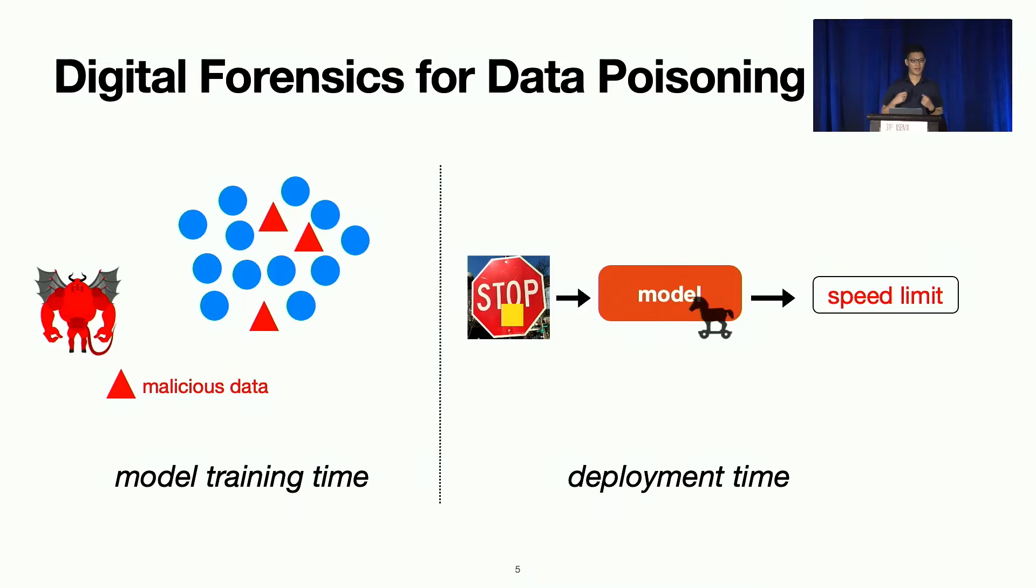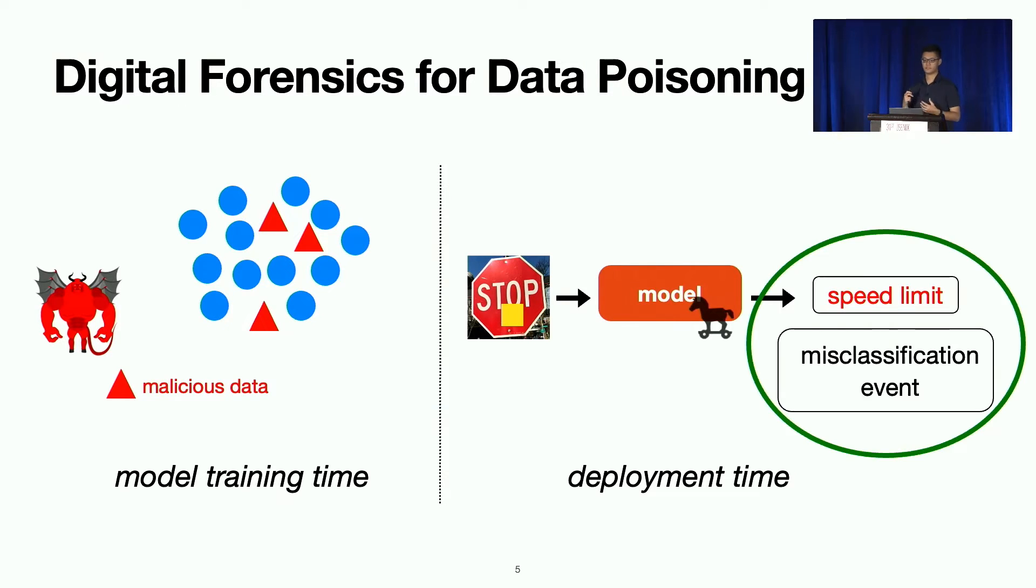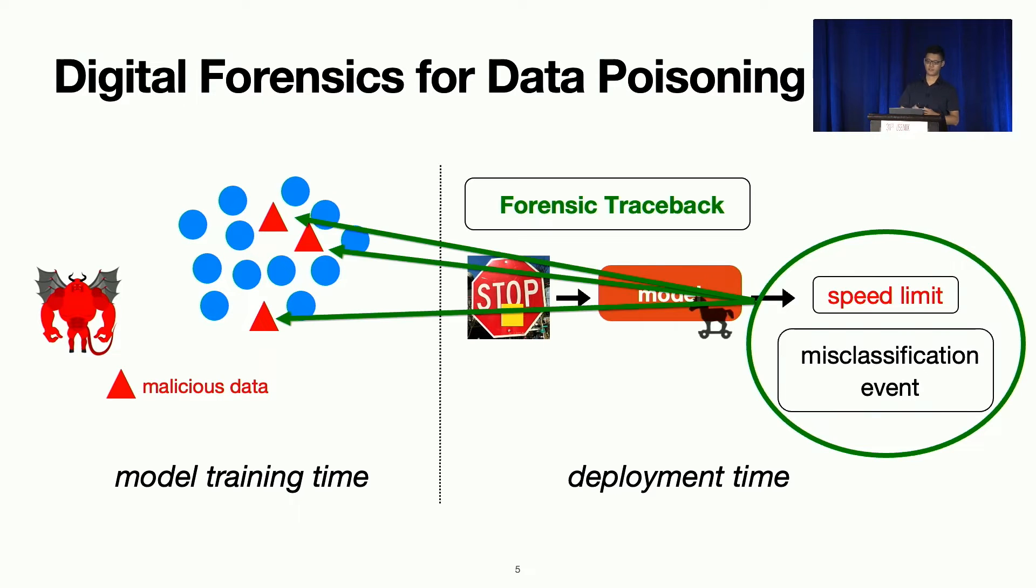Now forensics comes after everything has already happened here. They seek to analyze this misclassification event, as we call it, and to see what went wrong. Who is the attacker that tried to already break my system and break my defense and cause the damage? And in the case of poison attack, that's easy to answer. It's a set of poison data that are responsible for this misclassification.